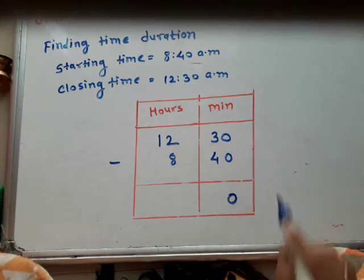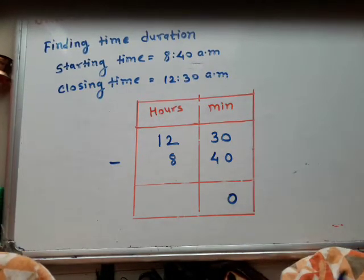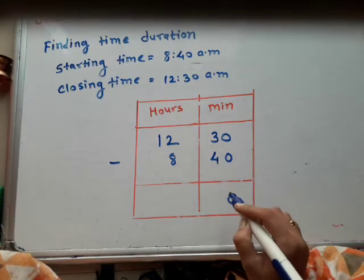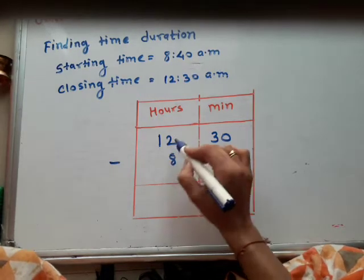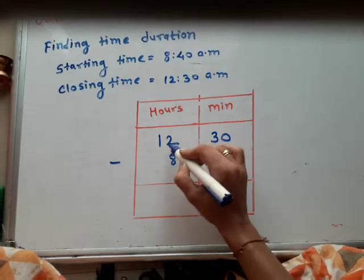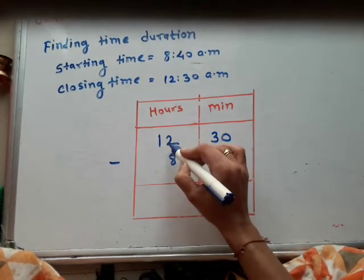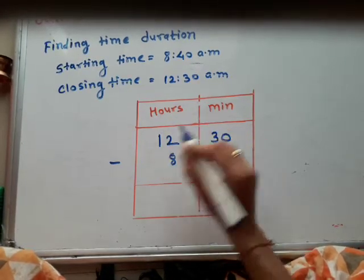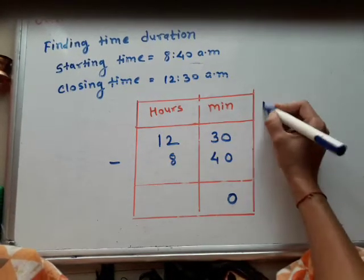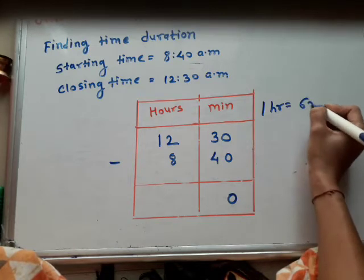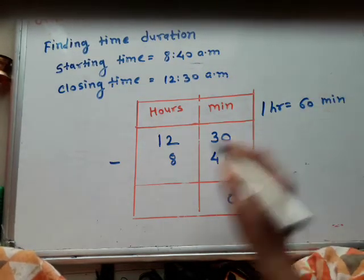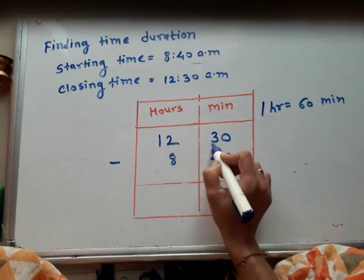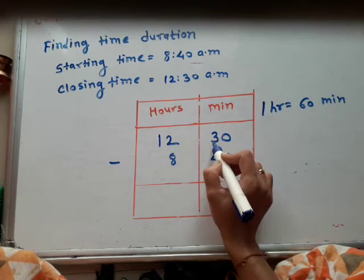Now, 30 minus 40 is not possible. So here we always take 1 from the next number. But see here — this column is hours and these are minutes. And 1 hour means 60 minutes. So we borrow from 12, and here we get 11 hours.